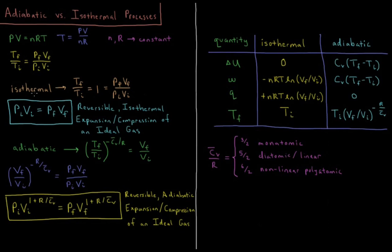We're going to look at what this implies for how various quantities change in isothermal versus adiabatic processes. For an isothermal process the temperature doesn't change — 'iso' meaning same, 'thermal' meaning temperature — so Tf over Ti equals one, meaning PF·VF over PI·VI equals one. For a reversible isothermal expansion or compression of an ideal gas, PI·VI equals PF·VF.